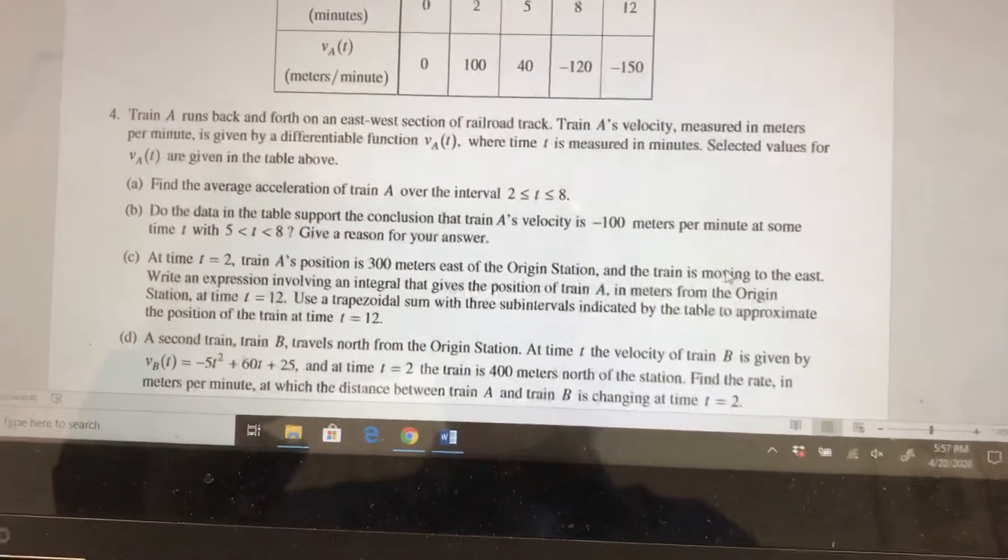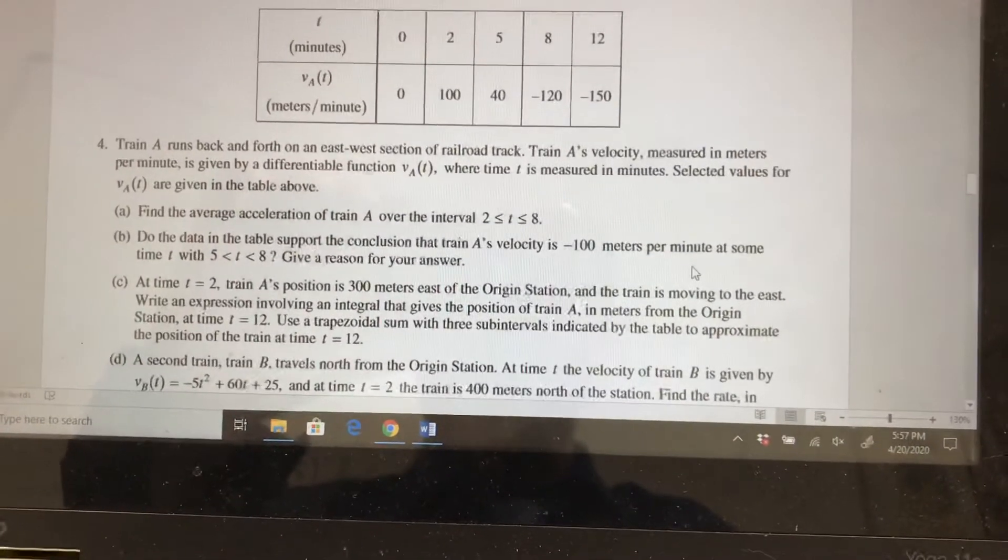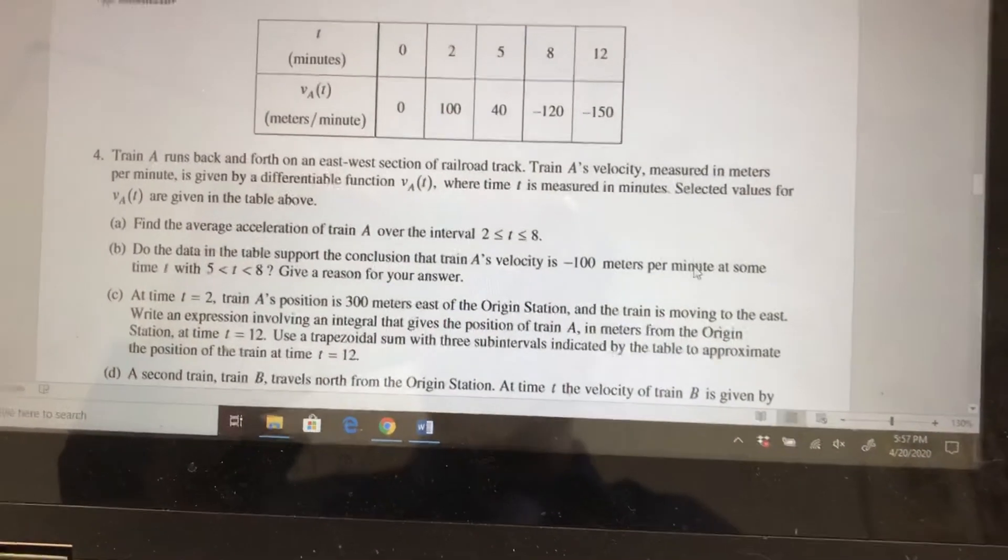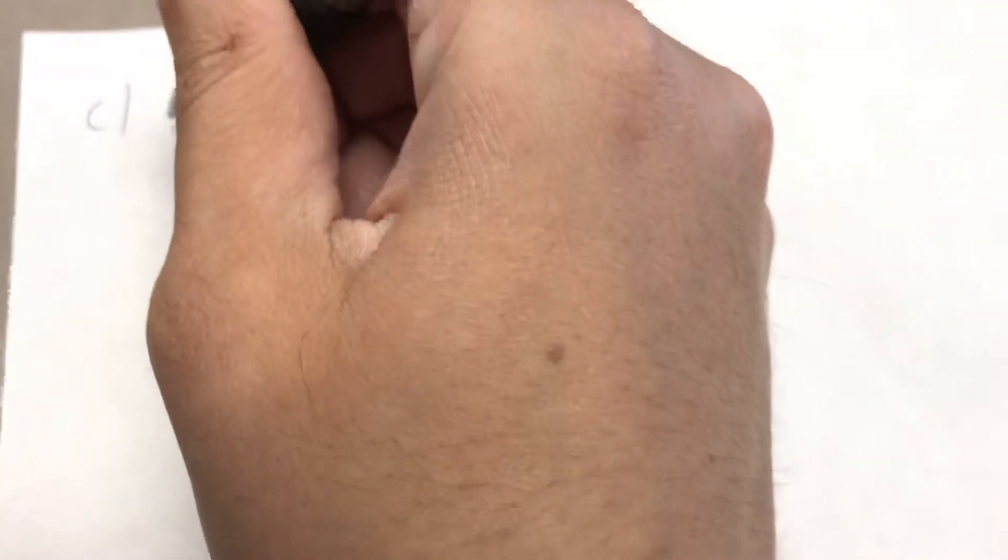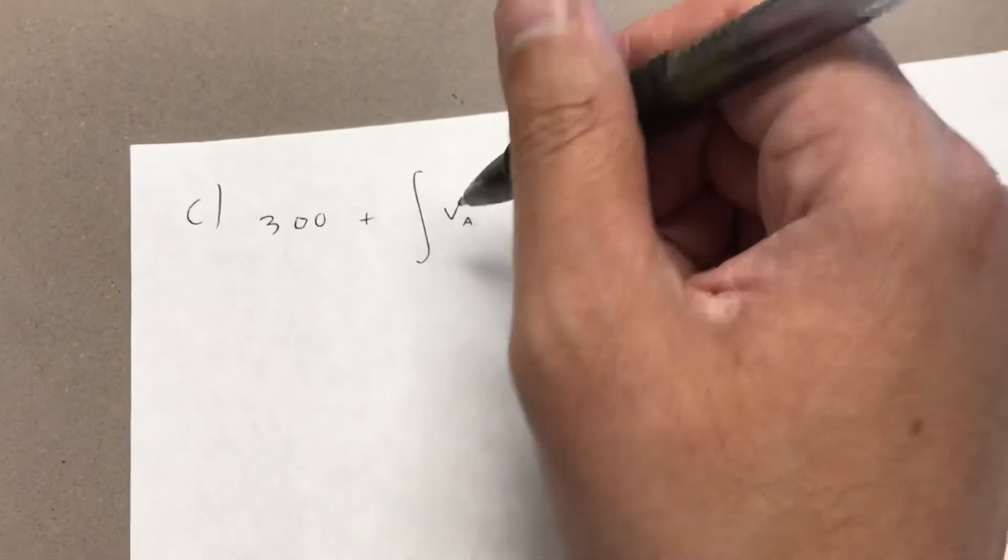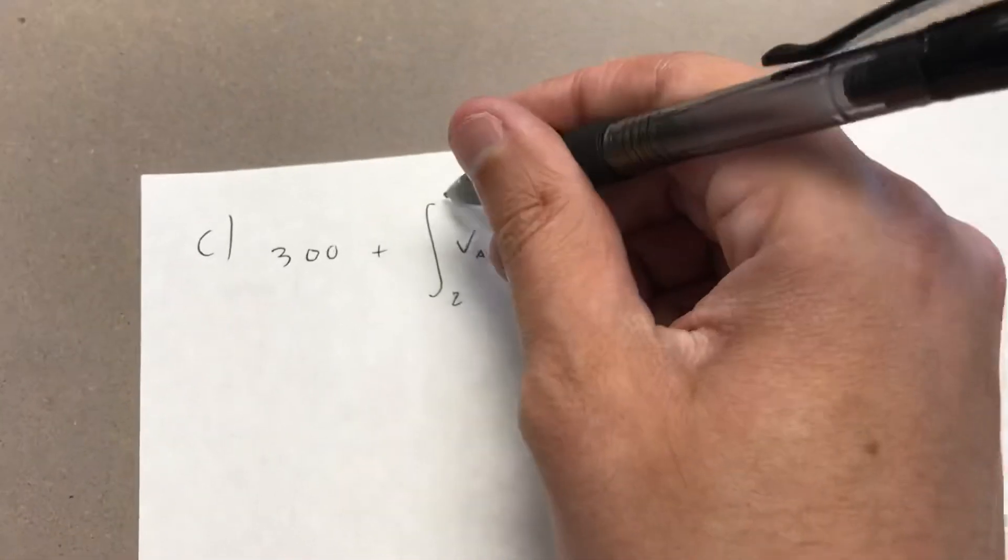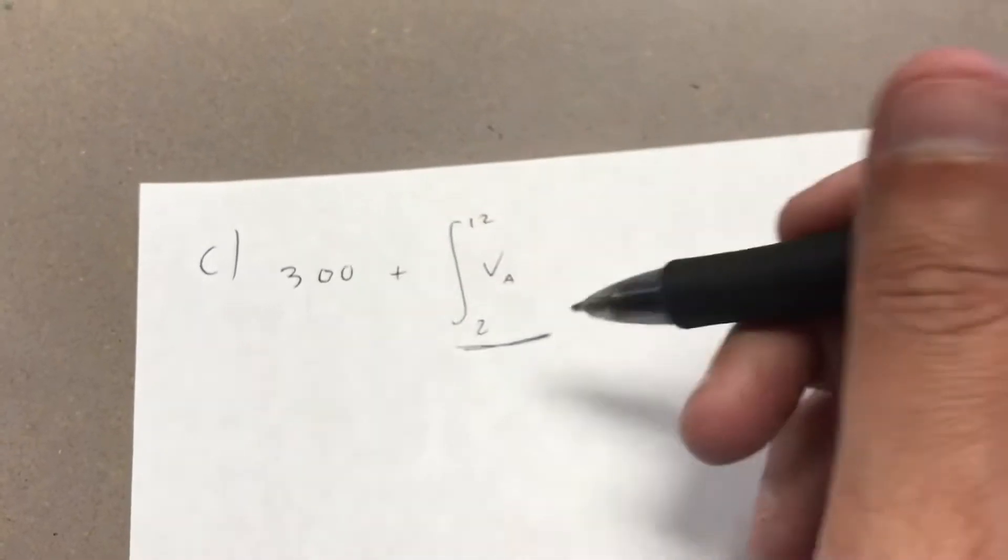Part C, I did get a couple of questions here. They ask you to use a trapezoidal sum, and be careful because it's starting out at 300, so don't lose the 300. You're basically starting out at a position of 300, and then you want to take the integral of the velocity function from the starting time to the ending time. That'll tell you your displacement over that interval, and you add that to your original position to get your new position.